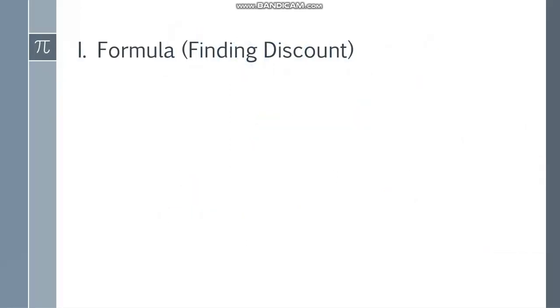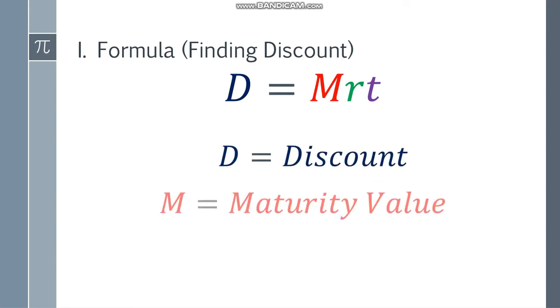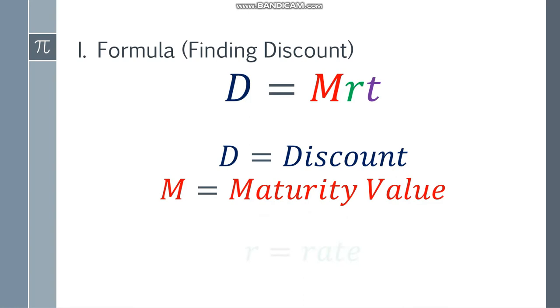Let's start with the formula for finding discount. To find the discount, our formula is D equals MRT, where D is the discount, M is the maturity value, R is the rate, and T is time. The time is always dependent on years, so if it's in months, you need to adjust it.